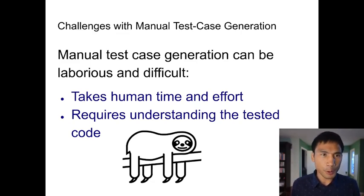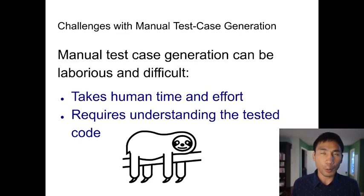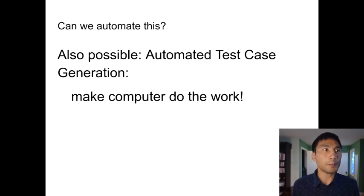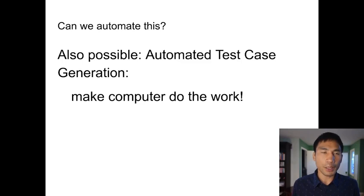You can do some testing without understanding the tested code, of course. But the best kinds of tests include some that do really require understanding the tested code, as in white box testing. So if there are things that we don't want to do, one approach is to say, could a computer do it? Let's think about automated test case generation — the idea is to make the computer do the work.